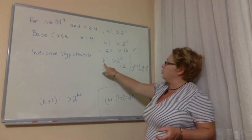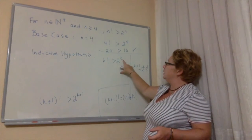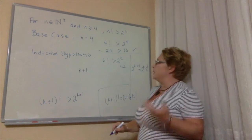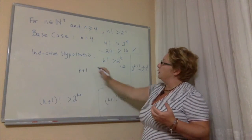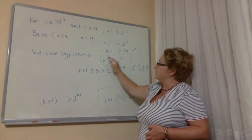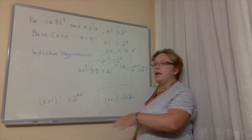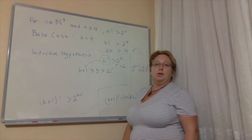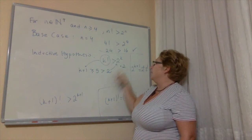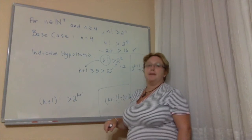Since k plus 1 is at least 5, which is greater than 2, multiplying the larger side by k plus 1 and the smaller side by 2 means the inequality still holds — we're scaling the bigger quantity by an even larger factor. Therefore, (k plus 1) factorial is greater than 2 to the (k plus 1), and we've shown the inductive step.